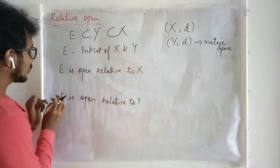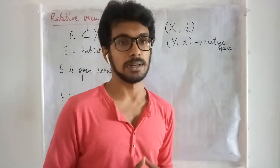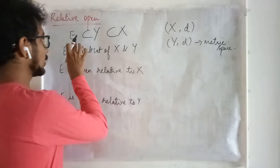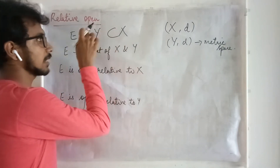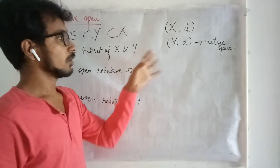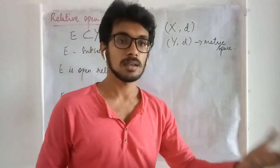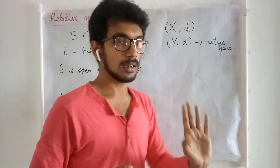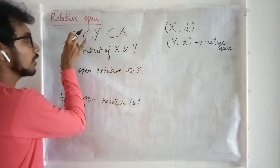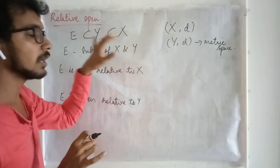When I treat E as a subset of Y, how can I say it is open? This relative openness means the same set may be treated as a subset of both X as well as Y. We have a metric space and a sub-metric space, and we consider a subset E which can be treated as a subset of both metric spaces.